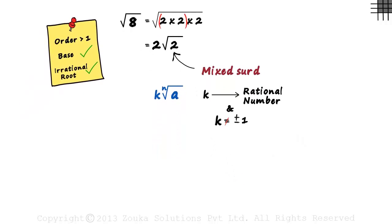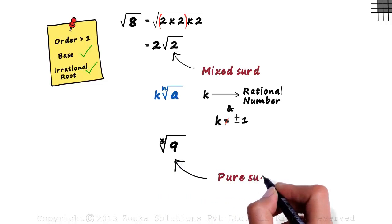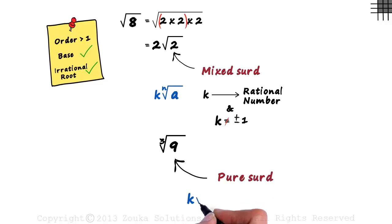Now here's another irrational number, cube root of nine. Is there a k here? Yes, it's one. This is actually one multiplied by cube root of nine. This is called a pure surd. It is of the form k nth root of a, where k is equal to plus or minus one.